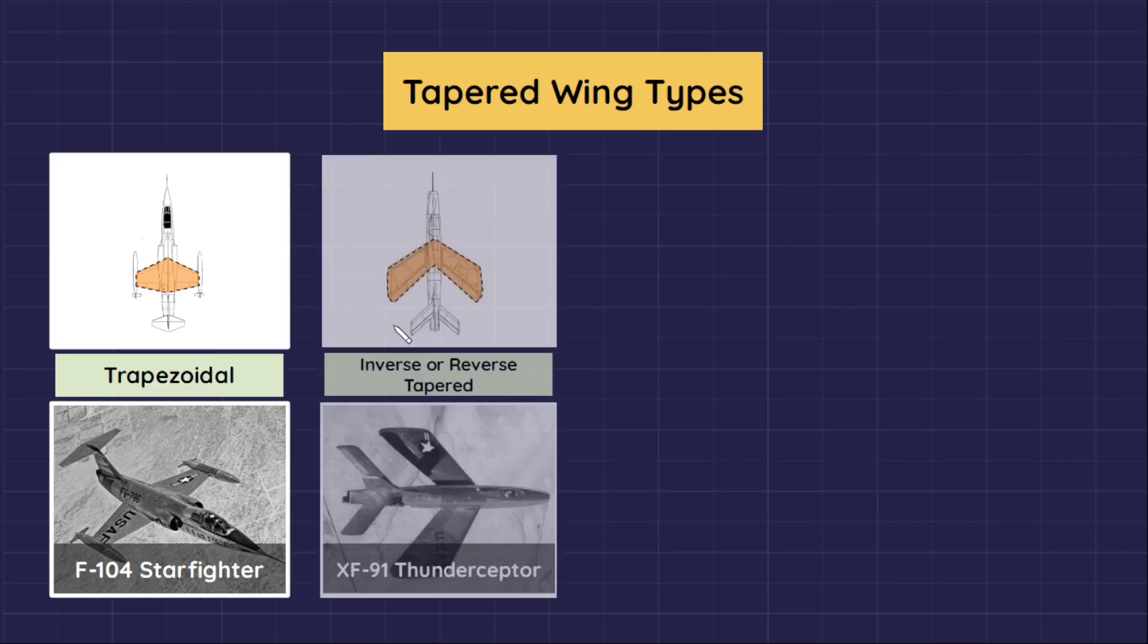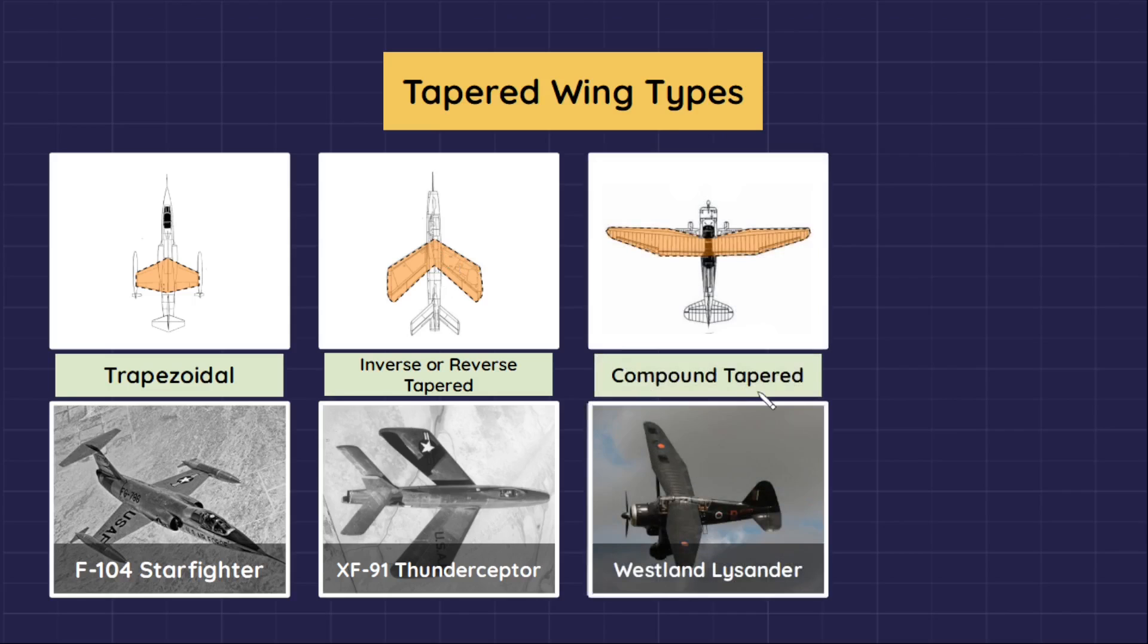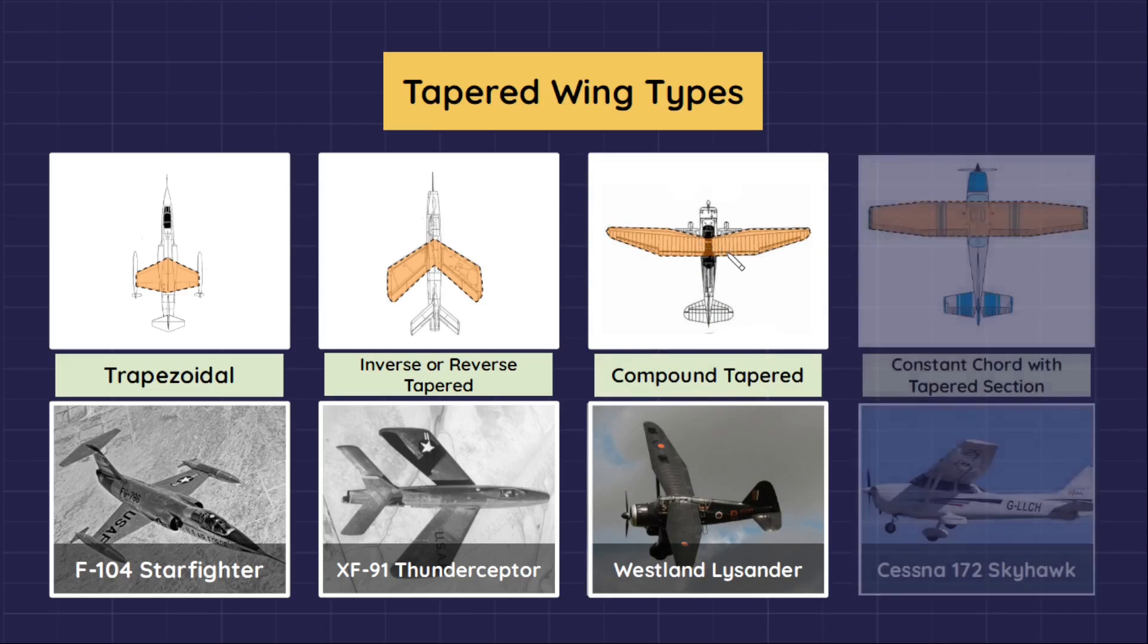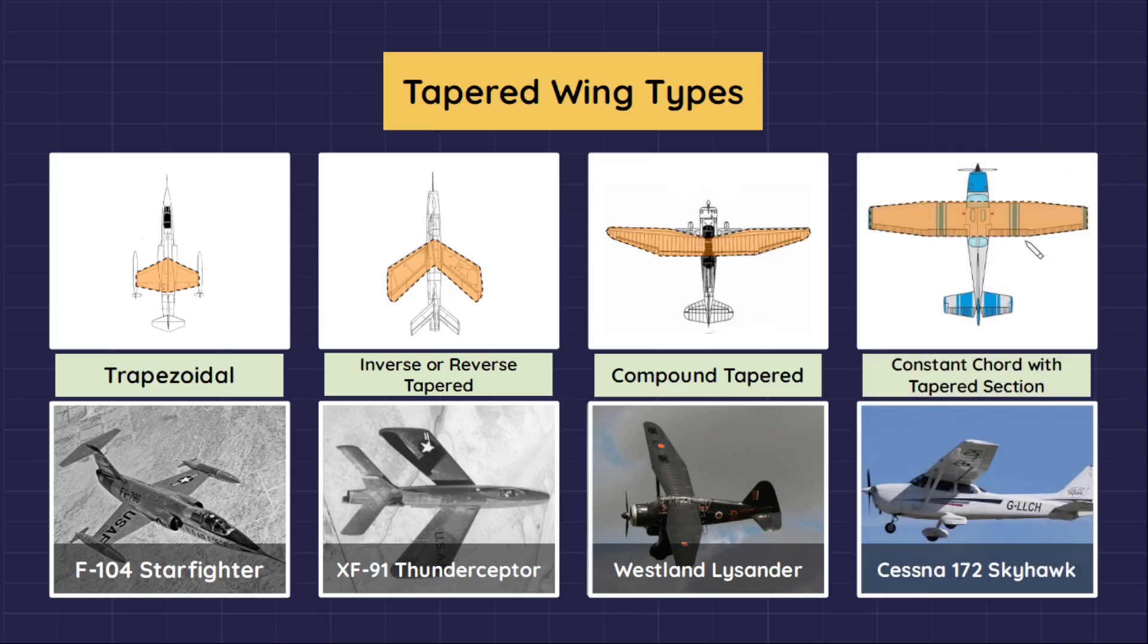Inverse or reverse tapered, the wing is widest near the tip and the taper ratio is greater than one. Compound tapered, the taper reverses toward the root. And finally, constant cord with tapered outer section. This is midway between the rectangular and the tapered wing.